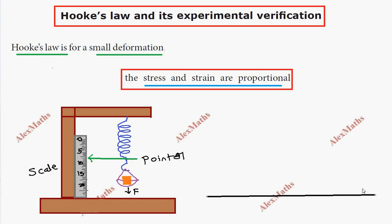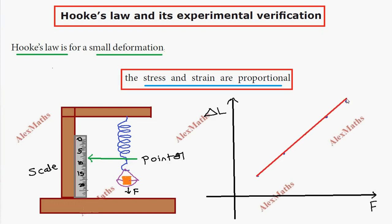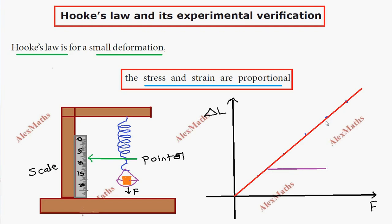On the graph, the horizontal axis (x-axis) has different values of force, and the vertical axis (y-axis) has different values of delta L. Plotting the table values gives us a straight line passing through the origin.